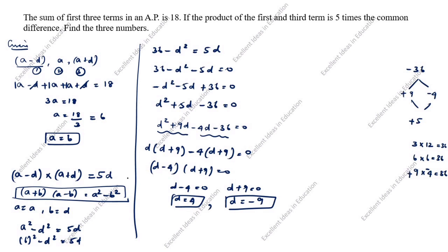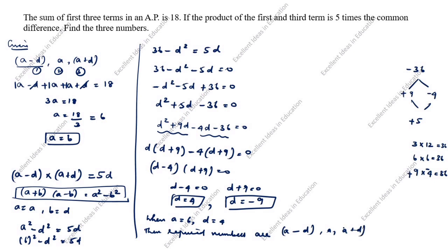We got two D values and one A value. We need to find the three numbers. When A is equal to 6 and D is equal to 4, the required numbers are A minus D, A, A plus D. Substituting: 6 minus 4 is 2, then 6, then 6 plus 4 is 10. So the three numbers are 2, 6, 10.